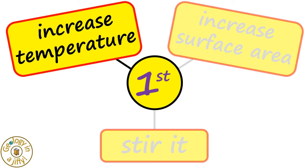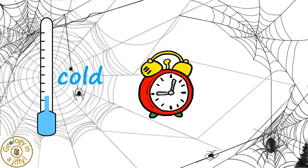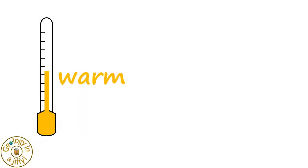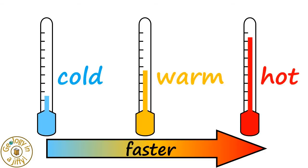The first is to increase the temperature. A solute will take a long time to dissolve in a cold solvent, a warm solvent will be quicker at dissolving the solute, and a hot solvent will dissolve the solute much more quickly. So the hotter the solvent, the faster the solute will dissolve.